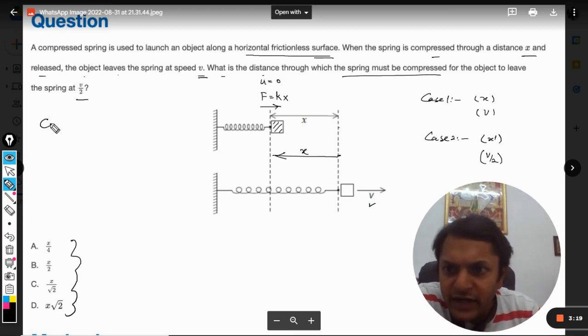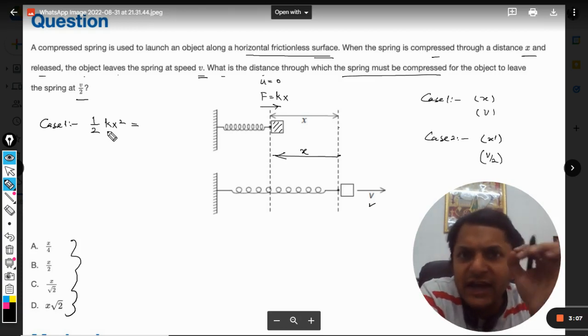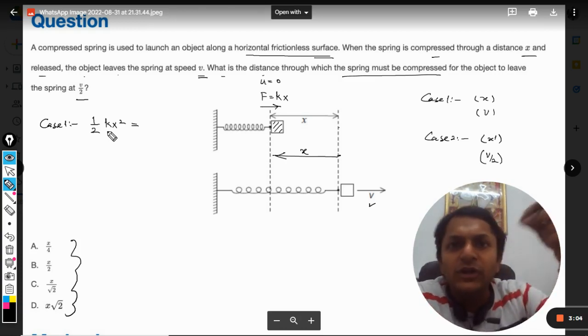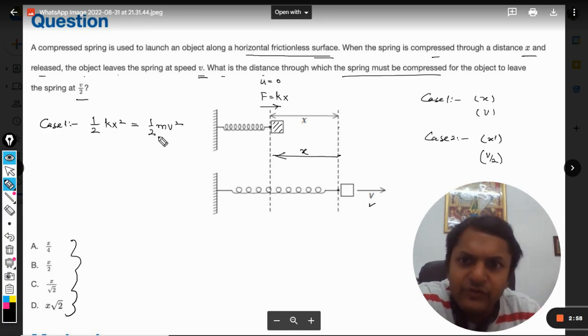We need to write equations for case number one first. Case number one is: all the potential energy stored in the spring when it is compressed by x, that will be ½kx², will get converted into the kinetic energy, so ½mv².